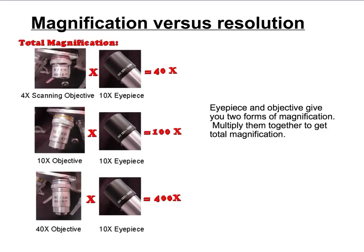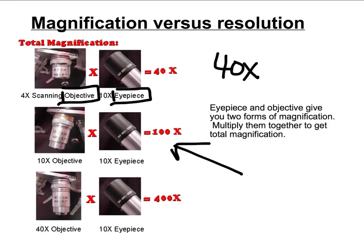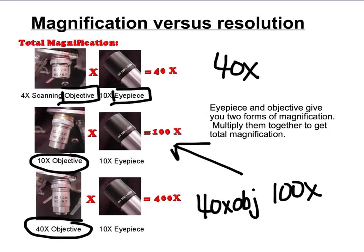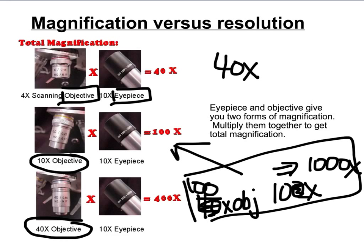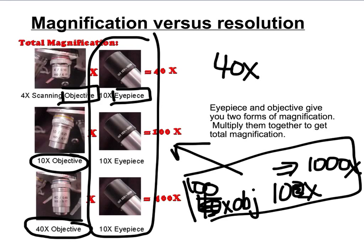Total magnification on a microscope is calculated by multiplying the objective by the eyepiece. A 4x objective with a 10x eyepiece gives 40x total magnification — not very much. To see cells properly, you typically want a 100x objective with a 10x eyepiece, giving 1000x magnification. That's what you need to see what's going on inside a cell. The eyepiece usually stays at 10x; the only thing that really changes is the objective.